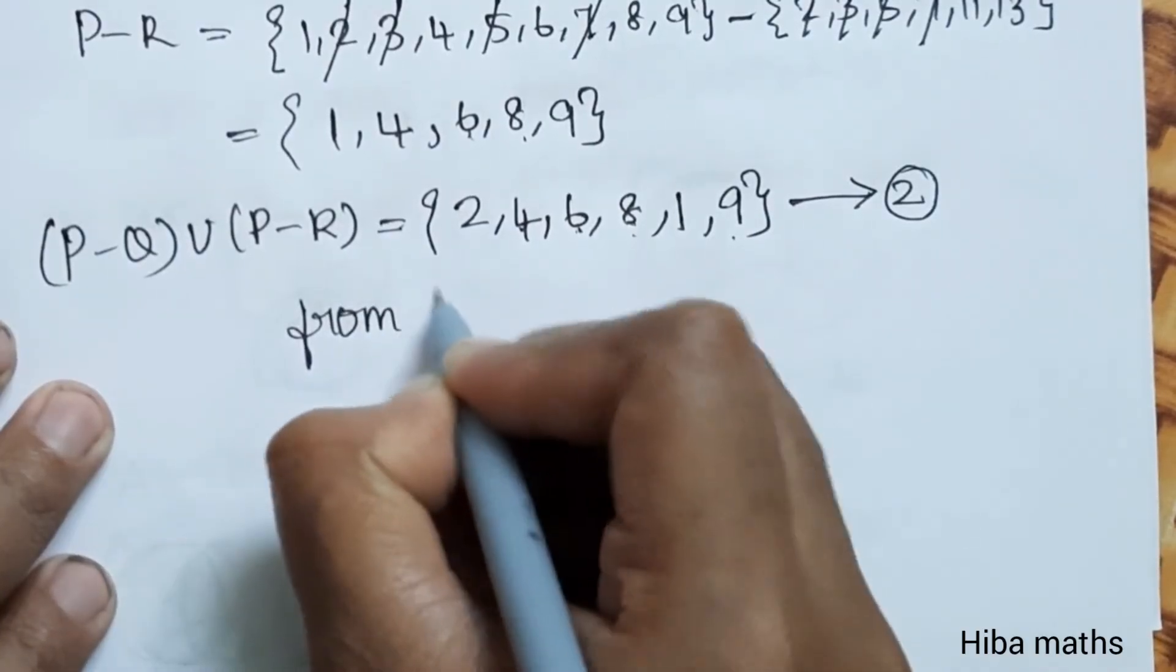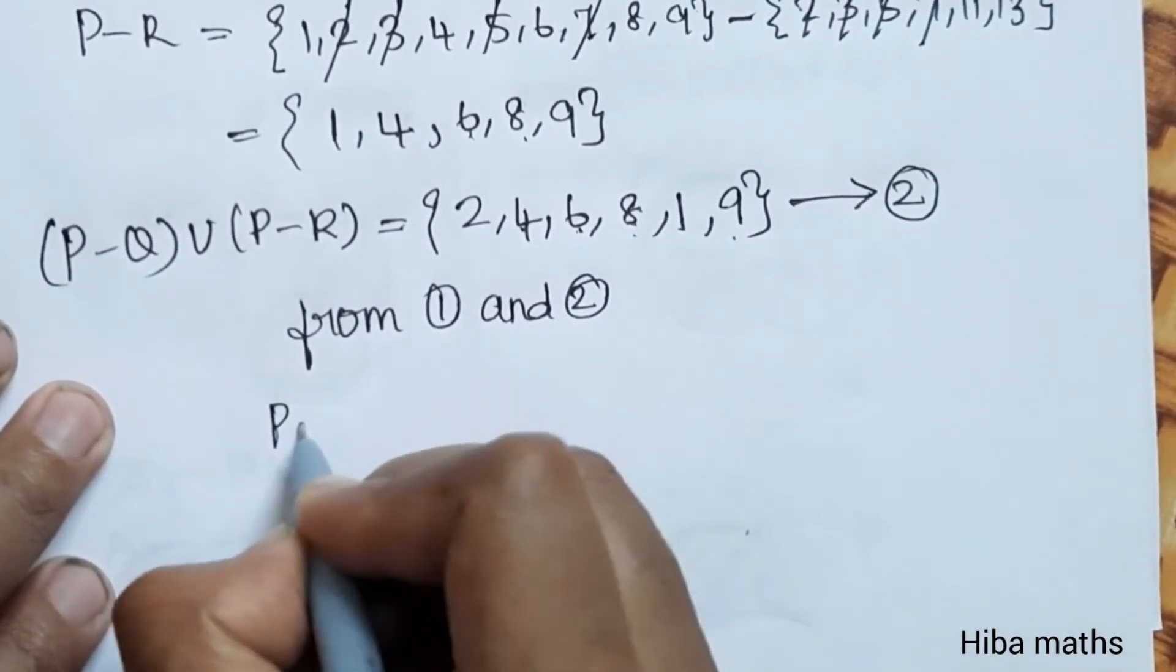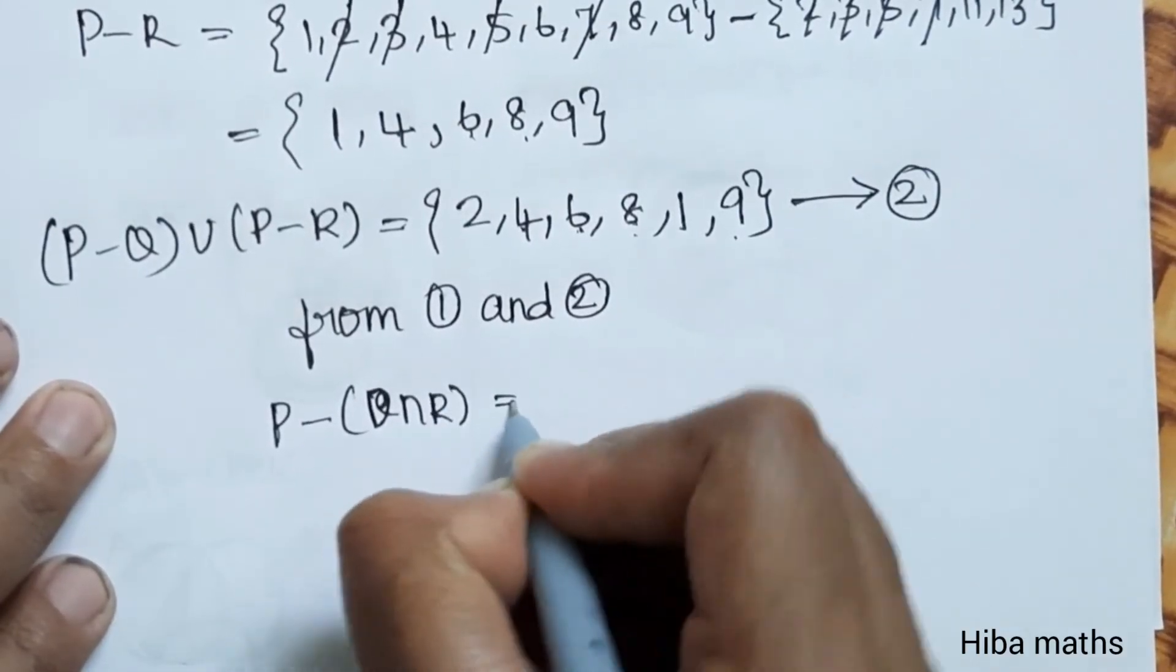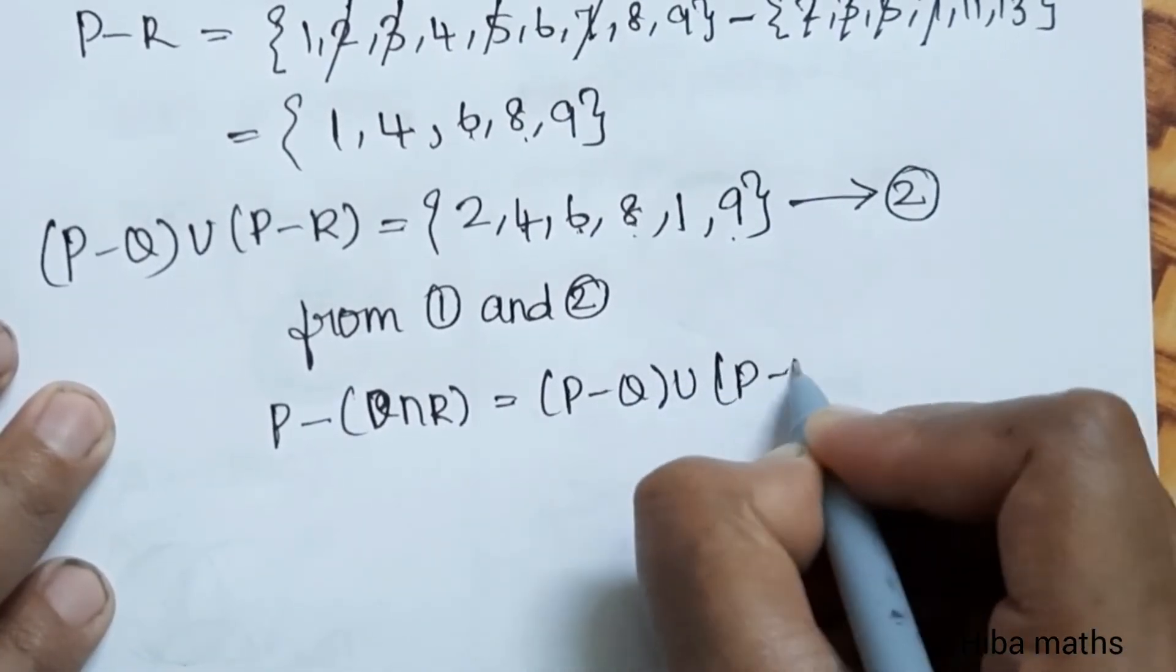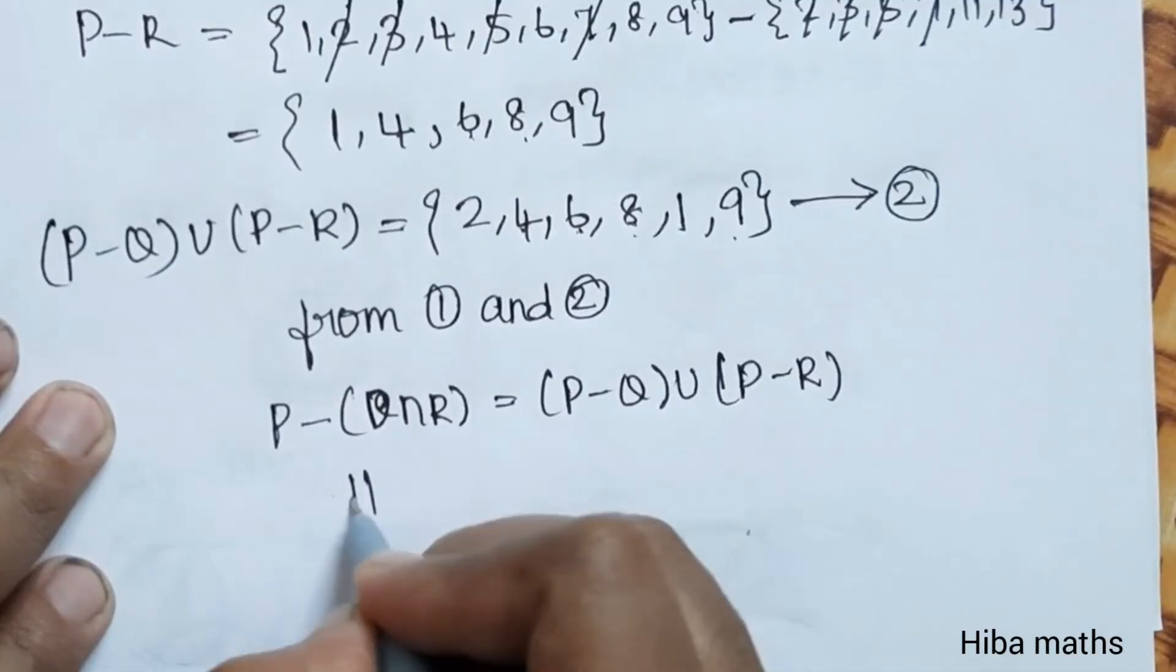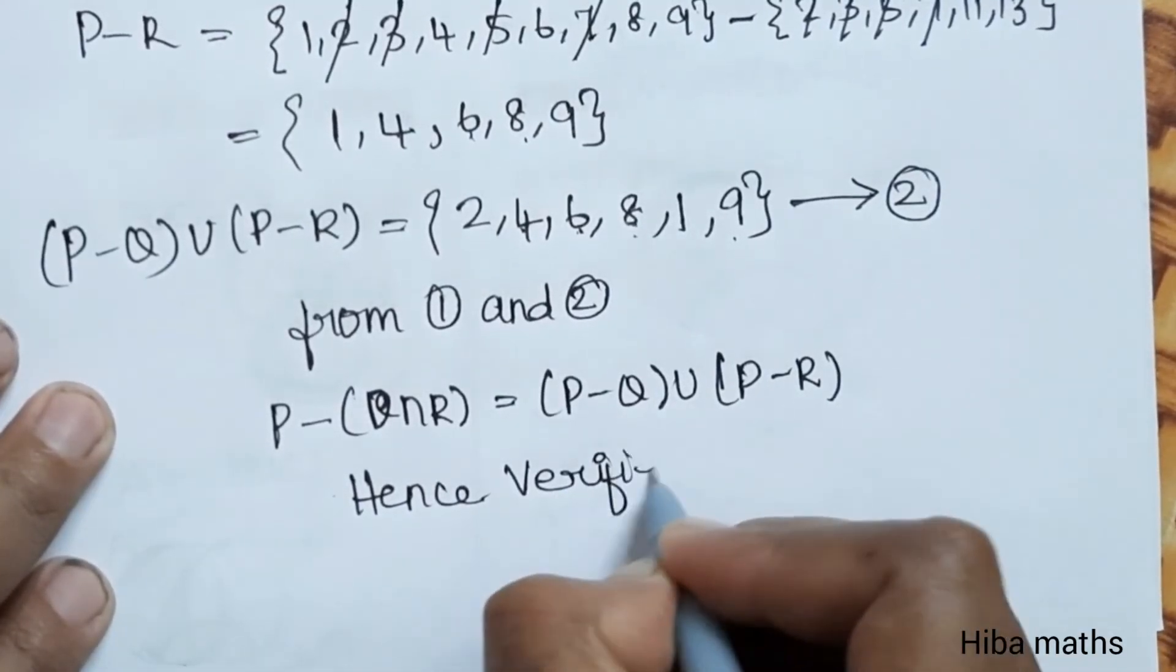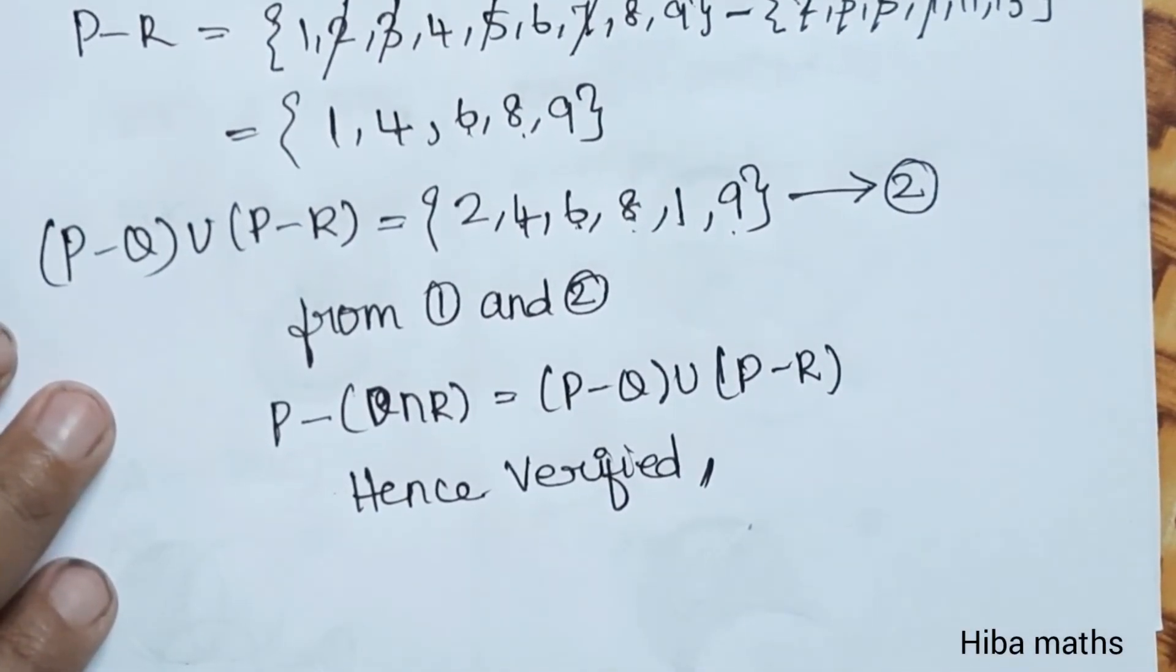From 1 and 2, P minus Q intersection R equals P minus Q union P minus R, hence verified. It's very easy and awesome. You can solve it. Thank you so much for watching. See you next time. Bye.